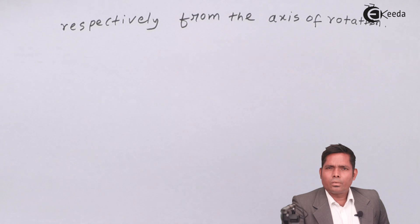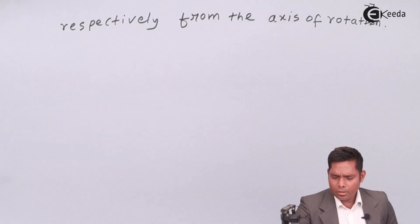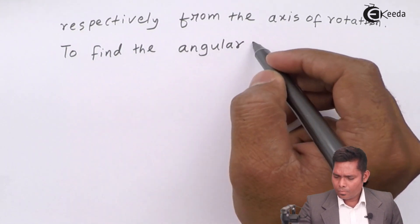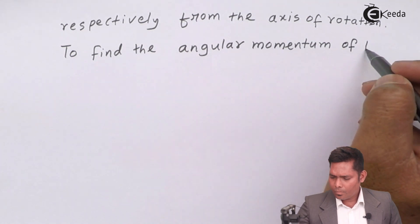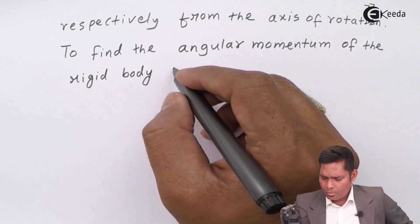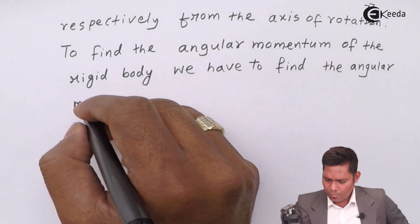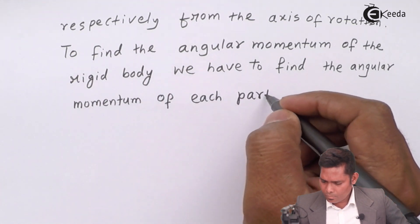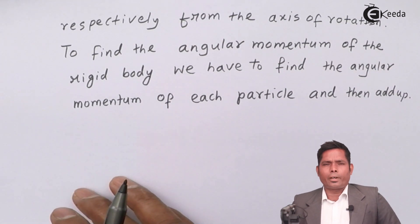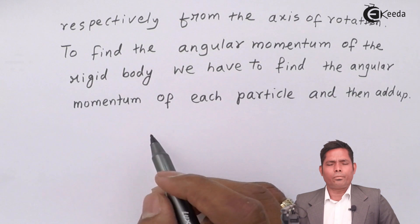This rigid body is rotating with angular velocity omega. To find the angular momentum of the rigid body, the basic idea is to find the angular momentum of each particle and add them up vectorially, because angular momentum is a vector quantity.